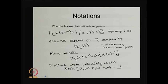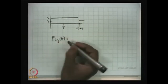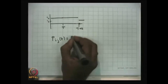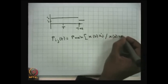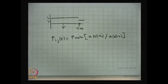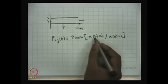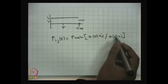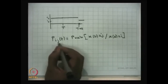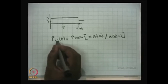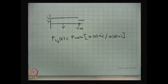The transition probability pᵢⱼ(t) is the probability that the system will be in state j at time t given that it was in state i at time 0. This is the notation: pᵢⱼ(t) with suffix letters i, j of t. This is also called the stationary transition probability — stationary meaning it is time-invariant; only the length of the interval matters.